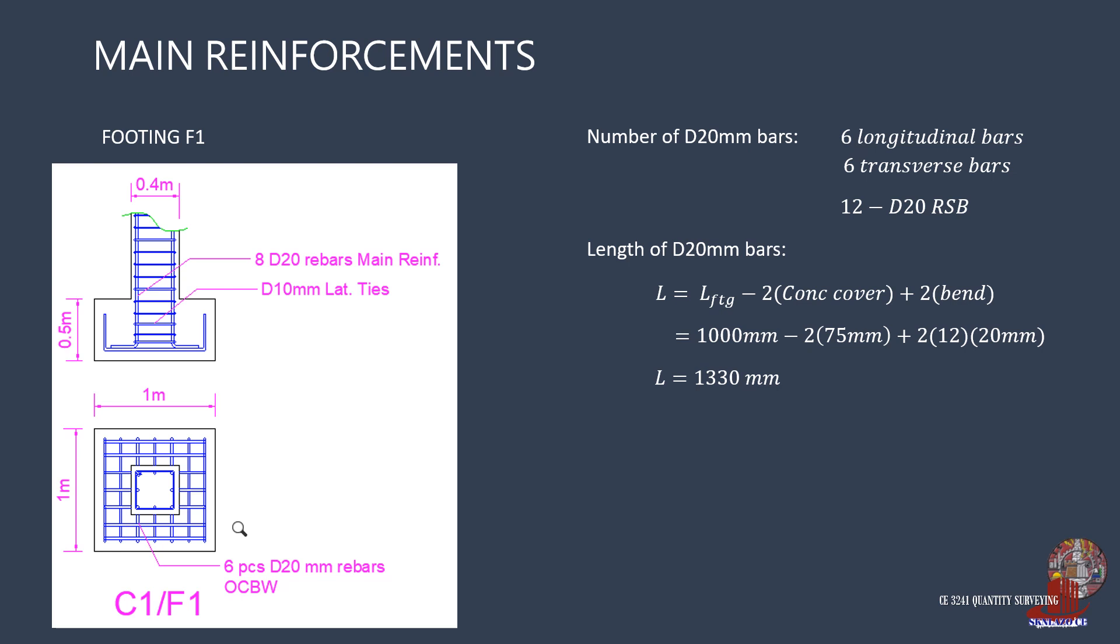Now, compute for the total number of bars required for F1, that is, 5 F1 footings times 12 bars in each, giving 60 D20mm RSB of 1330mm length.